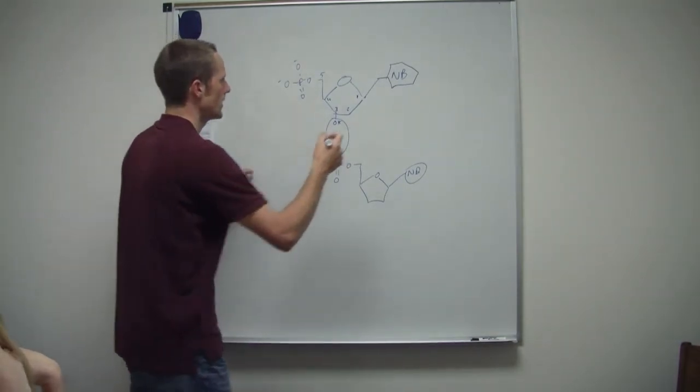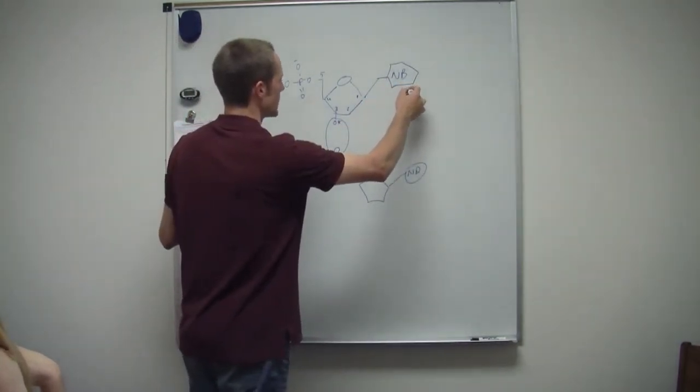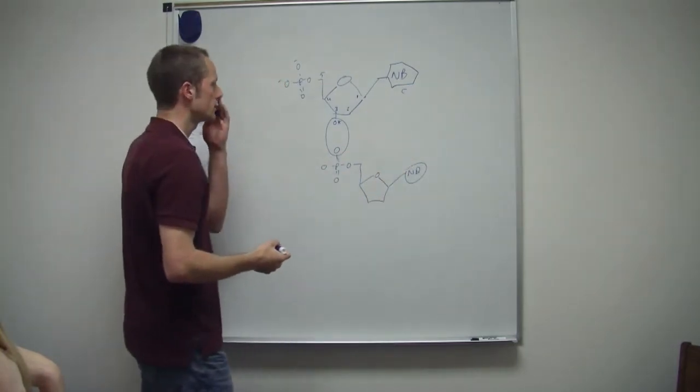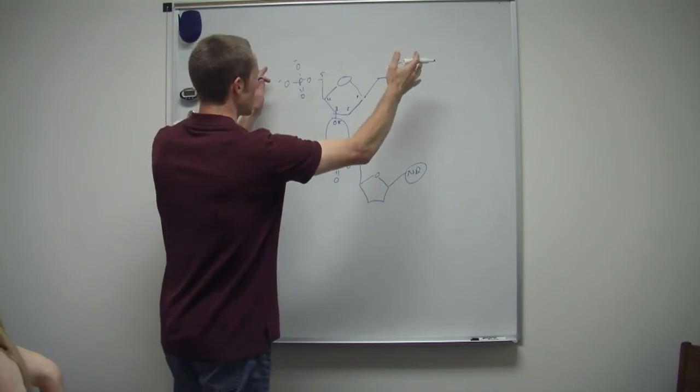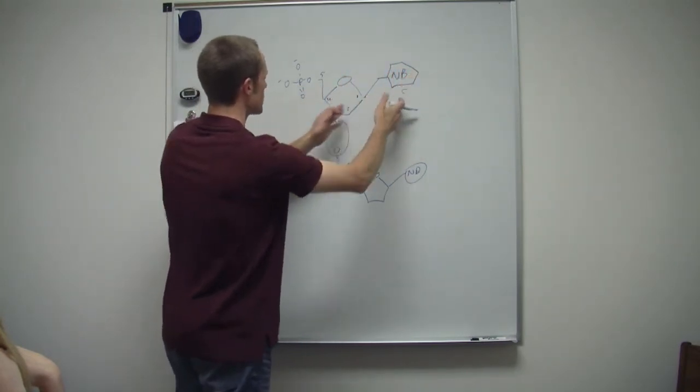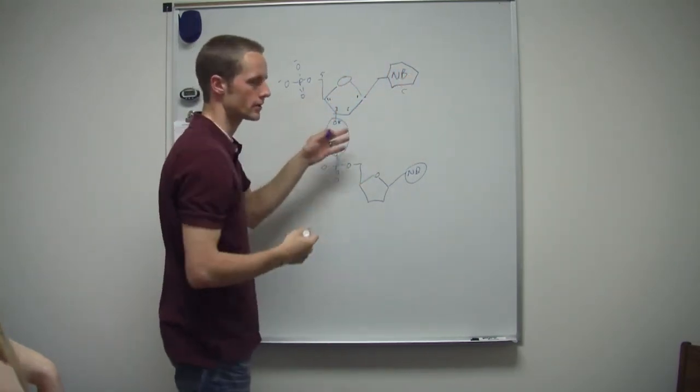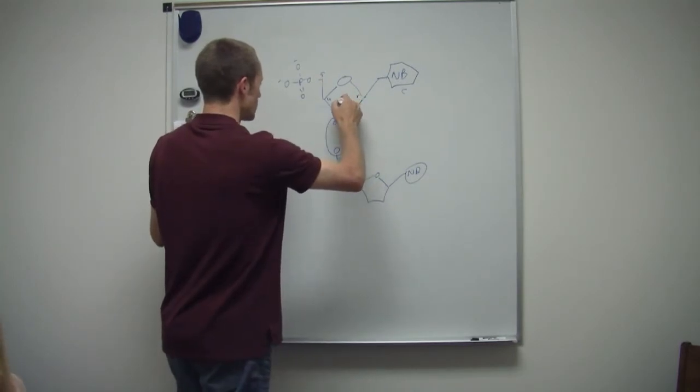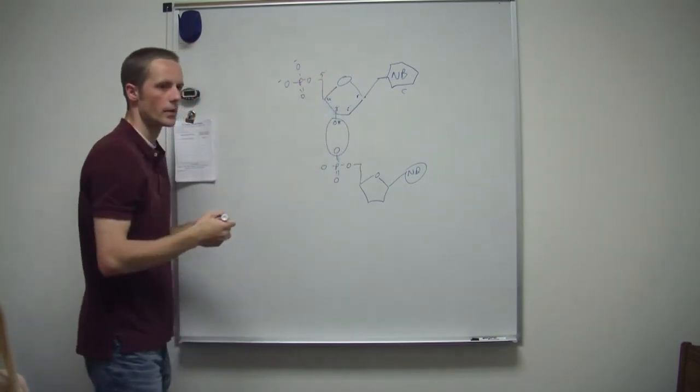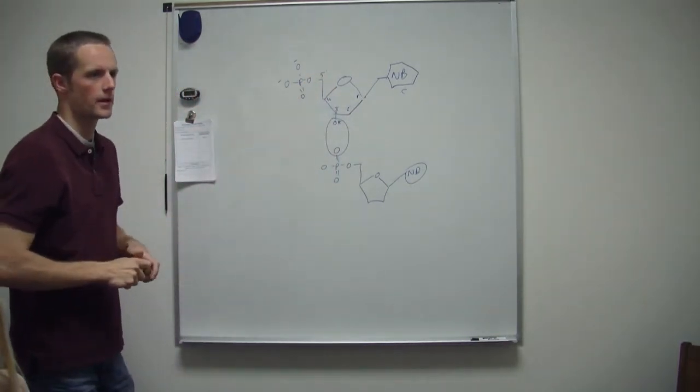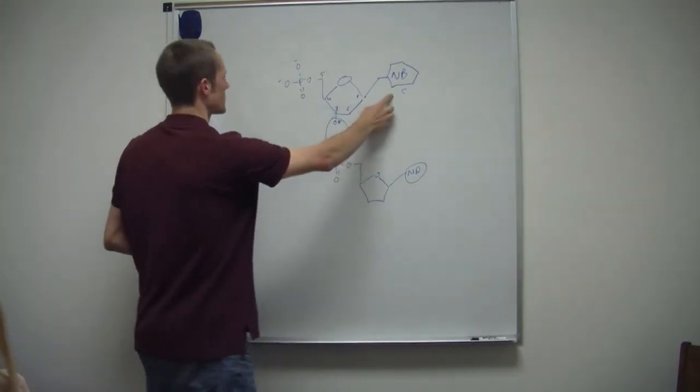So in this nitrogenous base there's going to be carbons. So to differentiate the carbons in the nucleic acid of the nitrogenous base from the sugar, they'll put the prime on it. And it's only in sugar. So that's one, two, three, four, and five prime. Okay. Because there will be carbons in the nitrogenous base.